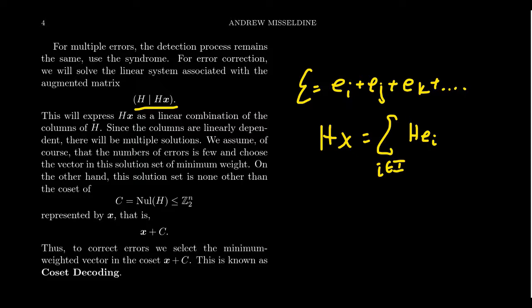Now, we assume, of course, that the number of errors is few. So we'll choose the vector in this solution set of minimum weight. So when you compute the solution set to this linear system, choose the vector which has smallest weight, because that would then be the most probable error. It's not perfect, but it's the most probable, because we're going with the assumption the number of errors is few.